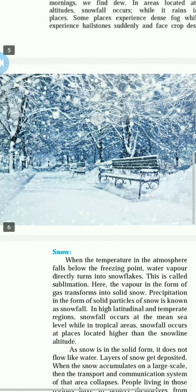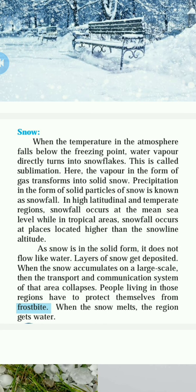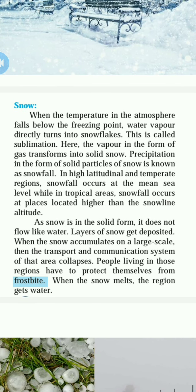Snow: when the temperature in the atmosphere falls below the freezing point, water vapor directly turns into snowflakes. This is called sublimation, where vapor in the form of gas transforms into solid snow. For example, in your refrigerator, when you fill the tray with water and it goes below the freezing point, that water transfers into ice cubes. This same process happens in our atmosphere — when the temperature goes below the freezing point, we experience snowfall.